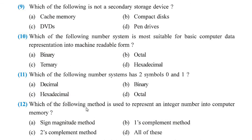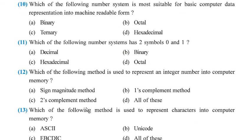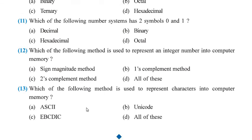Question number 11: Which of the following number systems uses only two symbols, that is 0 and 1? Again, the answer here is binary.